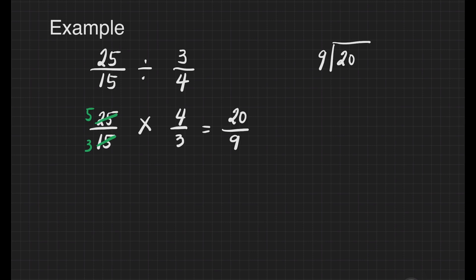How many nines are there in two? There's none. How many nines are there in twenty? There's two. Two times nine is equal to eighteen. We'll subtract. Zero minus eight cannot be. We will borrow from two. This two will become one. And then this zero will become ten. Ten minus eight is equal to two. So we have an answer. That's going to be two and two nines. Our answer for this question is two and two nines.